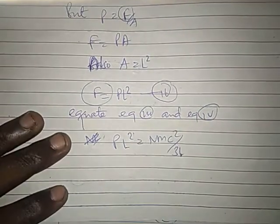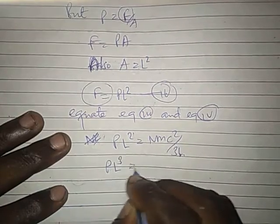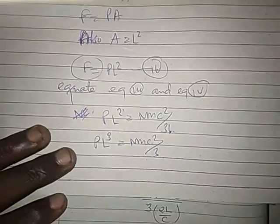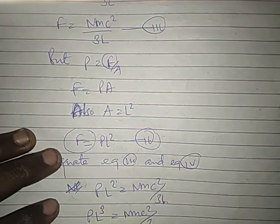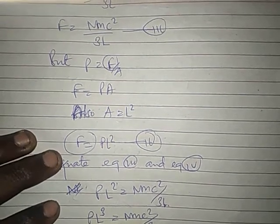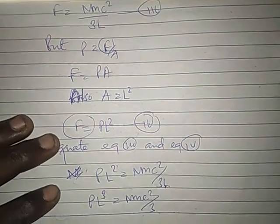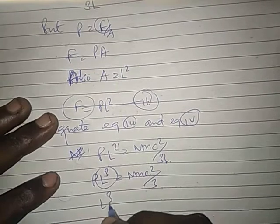We can multiply here by L, and we get PL cubed equals NMC squared divided by 3. Now, we know that L cubed is volume V.